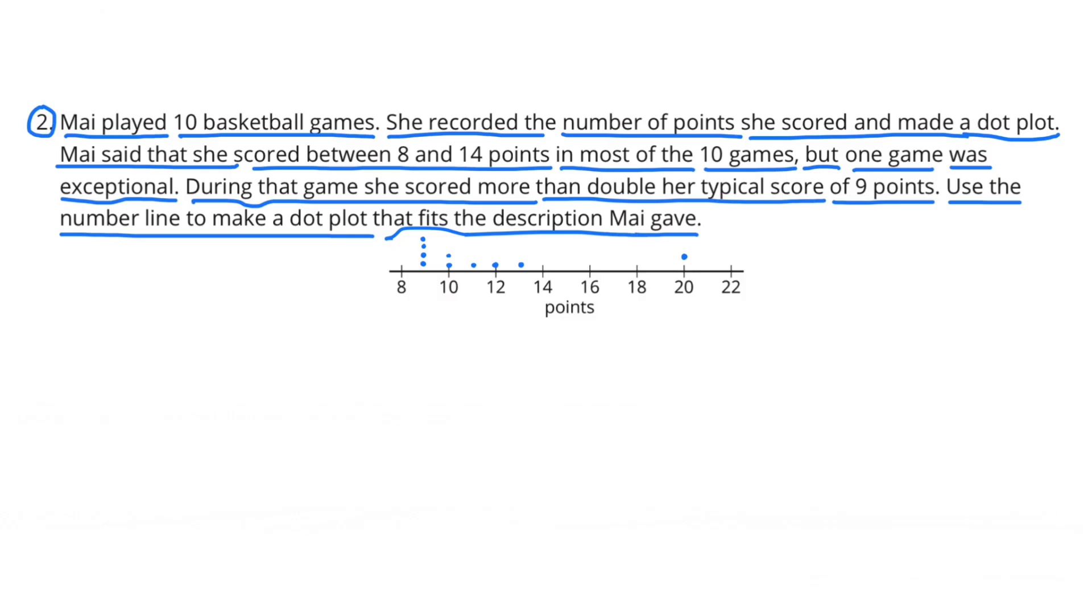Next I'd like to put quite a bit of dots above 9 because she said that 9 was her typical score. So I put 4 dots to represent 4 games where she scored 9 points. I put 2 dots over 10 to represent 2 games where she scored 10 points. I put 1 dot over 11, 1 dot over 12, and 1 dot over 13.